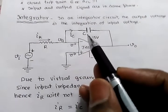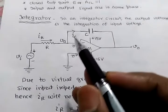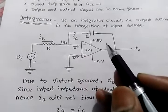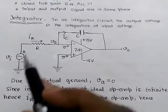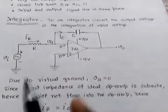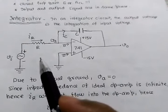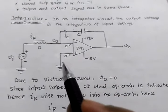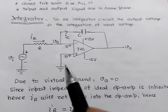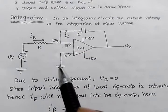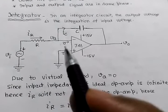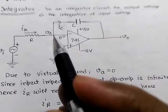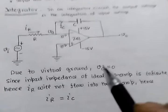A capacitor C is connected between the inverting terminal and the output. Input is applied at the inverting terminal through a resistance R. The non-inverting terminal is connected to the ground. Due to virtual ground, the voltage at the inverting terminal VA will also be zero.